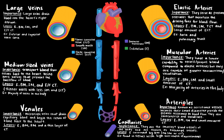Next are arterioles, which are known as resistant vessels because their small diameter provides the greatest resistance to blood flow. Vasoconstriction of arterioles increases resistance even more and decreases blood flow into capillaries. Vasodilation of arterioles decreases resistance and increases blood flow into capillaries. Their layers consist of endothelium, a basement membrane, smooth muscle, and a small amount of connective tissue.